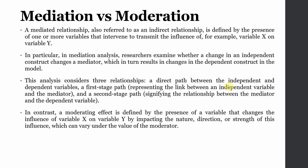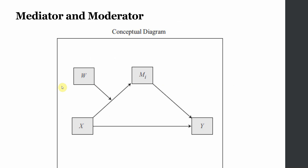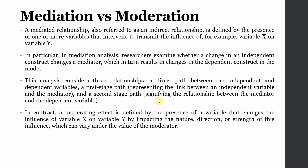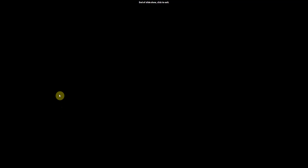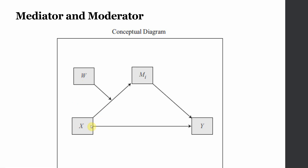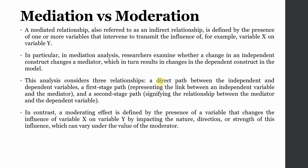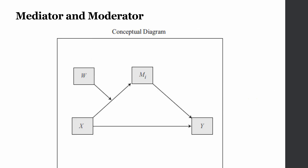First, a direct path between the independent and dependent variable — here it is between X and Y. Second, a first-stage path representing the link between the independent variable and the mediator — here it is X and M. And finally, the second stage signifying the relationship between the mediator and the dependent variable — here it is M and Y.